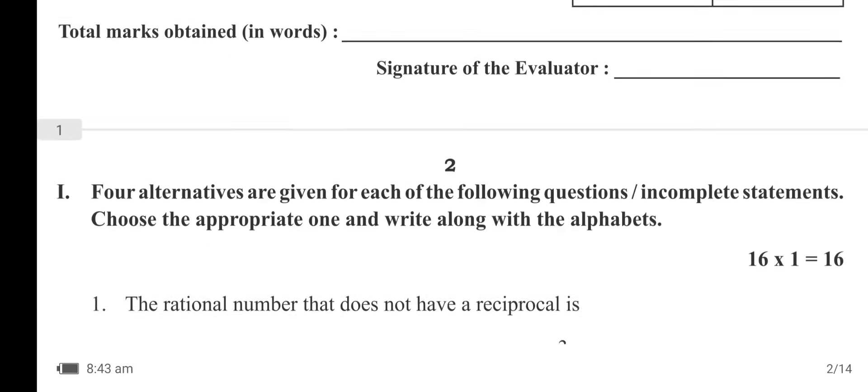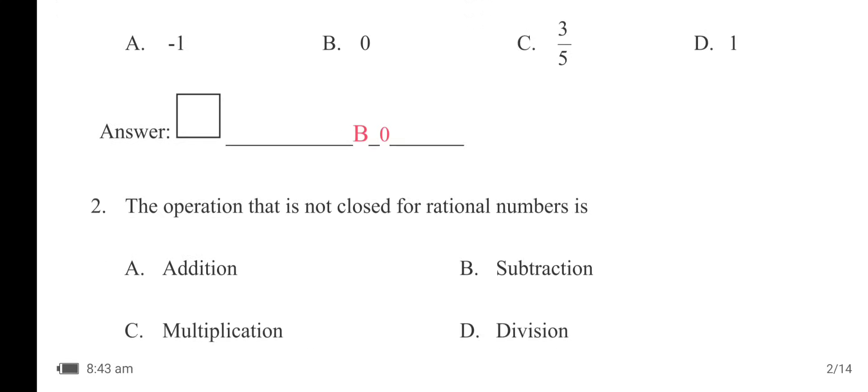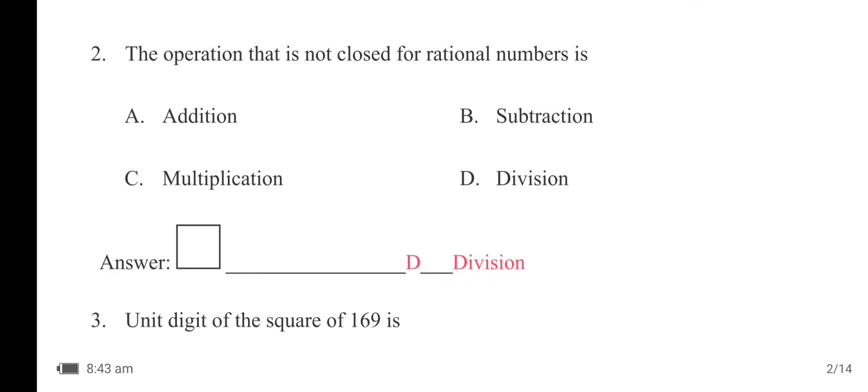The first question: the rational number that does not have a reciprocal is option B — 0. The operation that is not closed for rational numbers is option D — division.